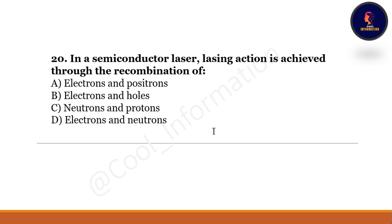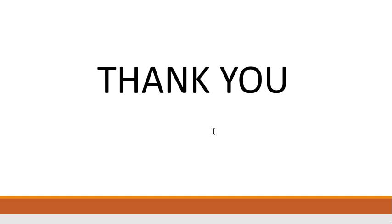Last question: In a semiconductor laser, lasing action is achieved through the recombination of what? Option A: electrons and positrons. Option B: electrons and holes. Option C: neutrons and protons. Option D: electrons and neutrons. The correct option is electrons and holes.